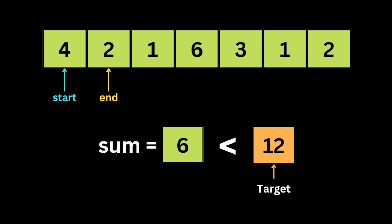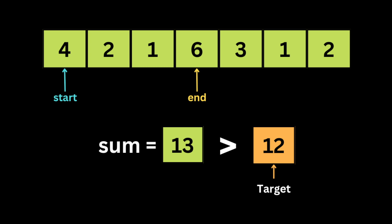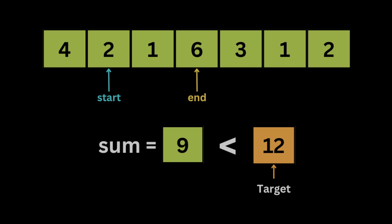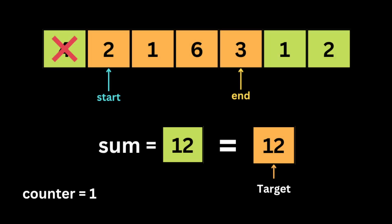The total is now 6, still smaller than the target, so we move end by one again. The sum is still smaller, so we move end again — now the sum is 13, which is greater than 12. We shrink the window by subtracting the value at start and moving start by one; the sum becomes 9. We expand again and the sum equals the target 12 — we found the first subarray.